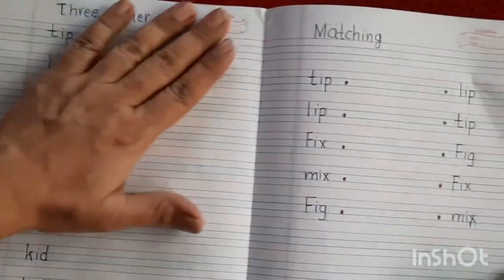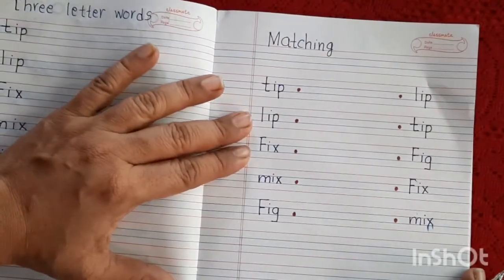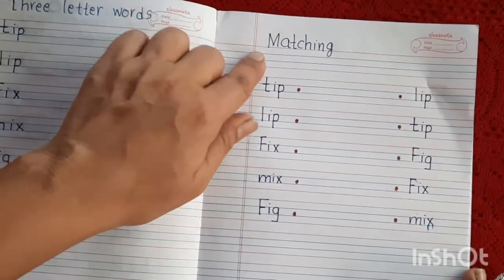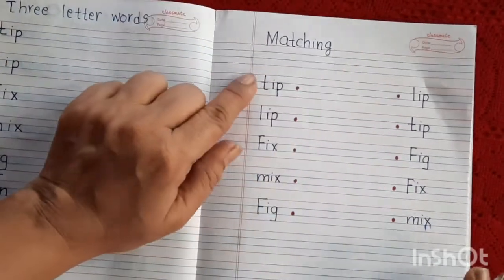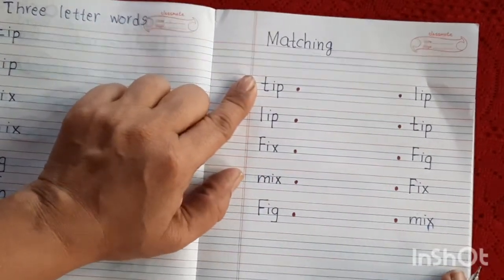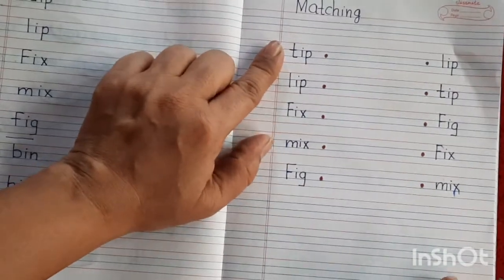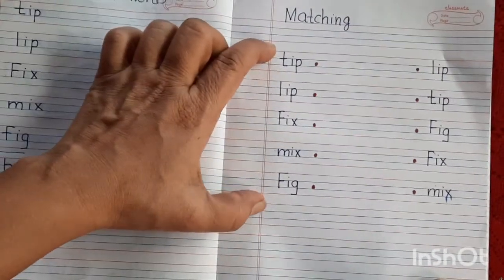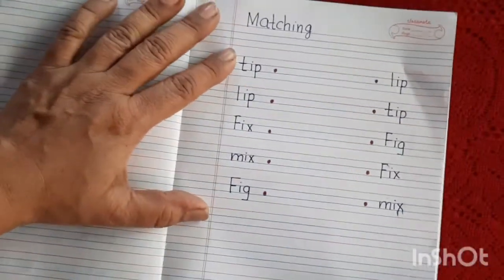આ ફાઇવ લેટર્સ તમે તમારી નોટબુક મા, રાઇટ ડાઉન કરી નાખો, ત્યાર પછી તમારે આ એક્સરસાઇઝ ન્યુ પેજ પર કરવાની છે. Matching,